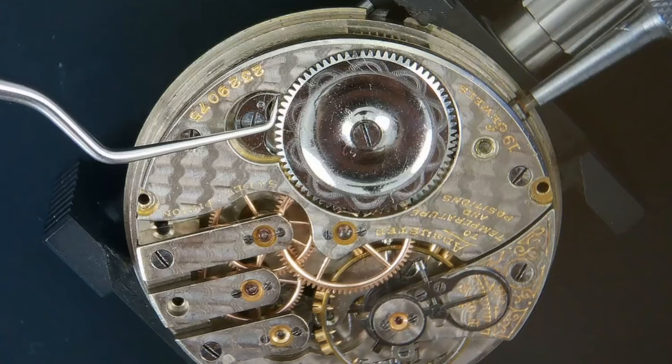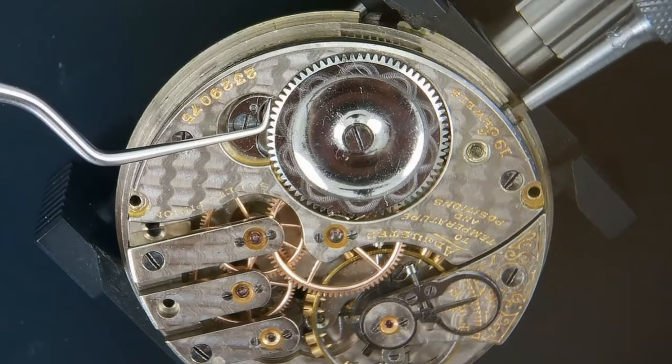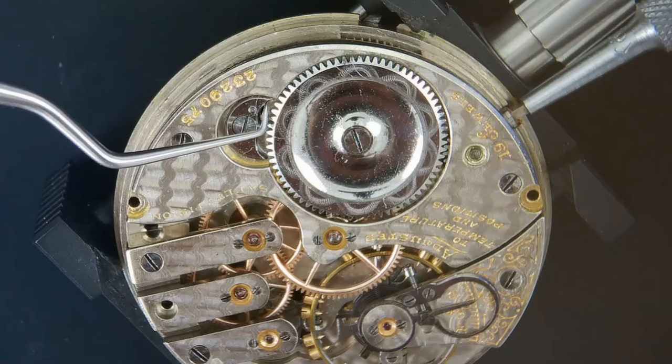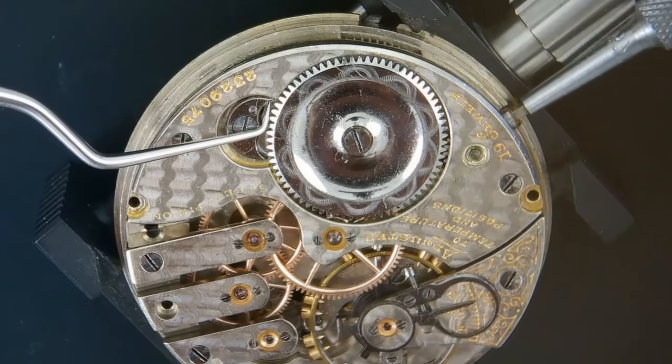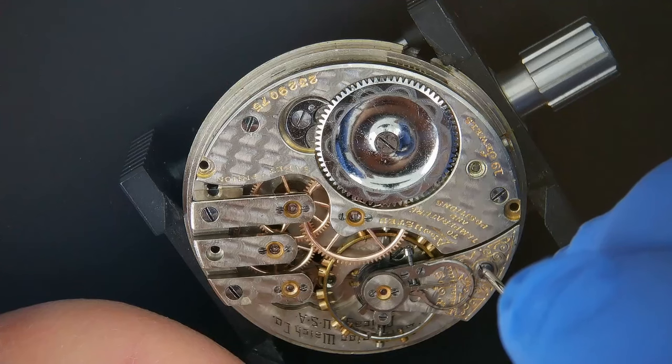The ratchet wheel moves, but it feels really gummed up. So we'll move on and we'll probably want to inspect the balance pivot for any obvious defects.